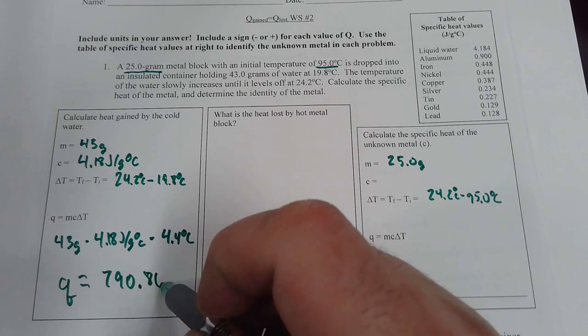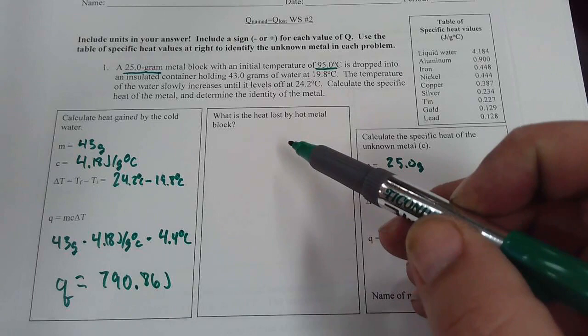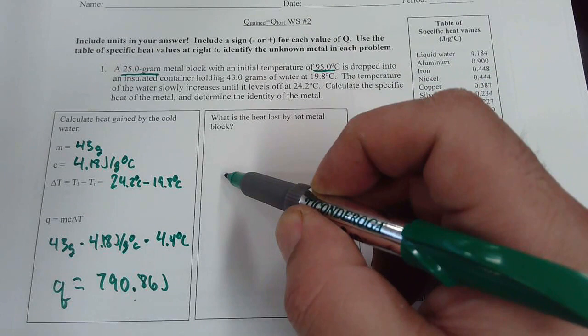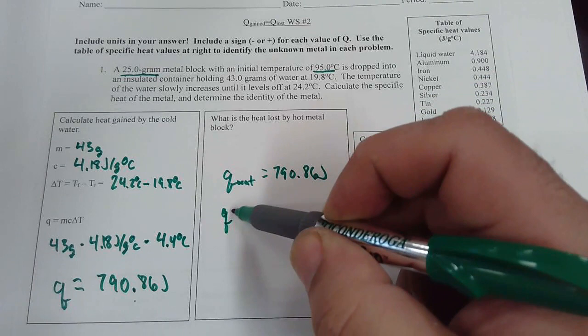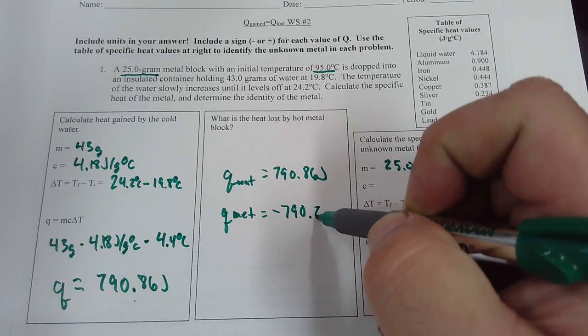So the heat that's lost by the hot metal is the opposite sign of the heat that was gained by the water. So the Q of the water we said was 790.86 joules. So that means that the Q of the metal would be negative 790.86 joules. So now we know our Q.